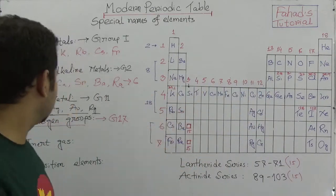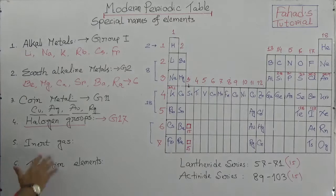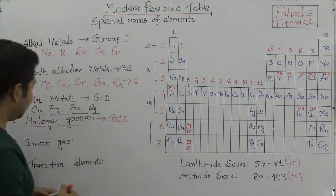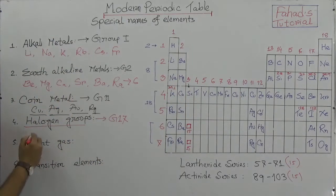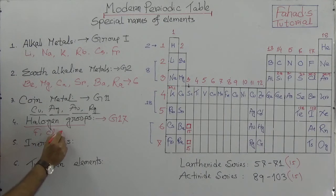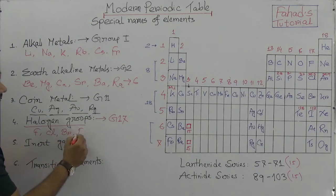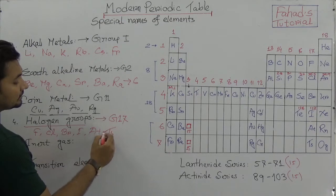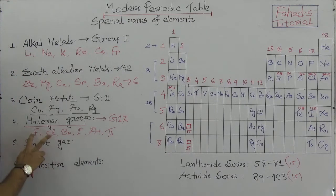So how many elements are there in halogens? We have six: fluorine, chlorine, bromine, iodine, astatine, and tennessine. These six elements are called halogens.